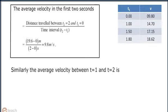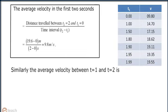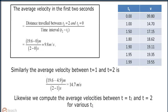Similarly, the average velocity between t equals 1 and t equals 2 is 19.6 minus 4.9 meters divided by 2 minus 1 seconds, which is equal to 14.7 meters per second. Likewise, we compute the average velocity between t equals t1 and t equals 2 for various values of t1.